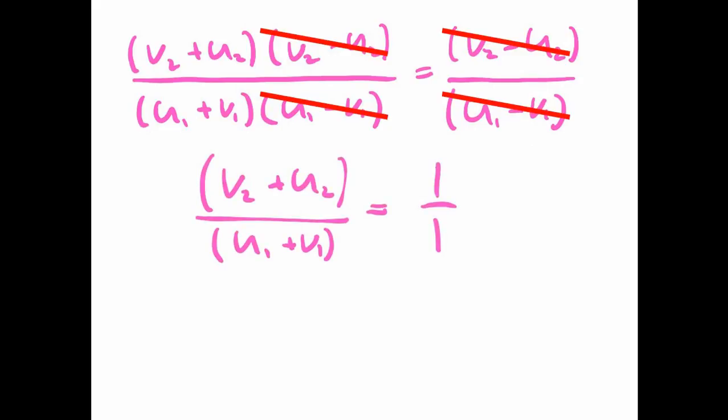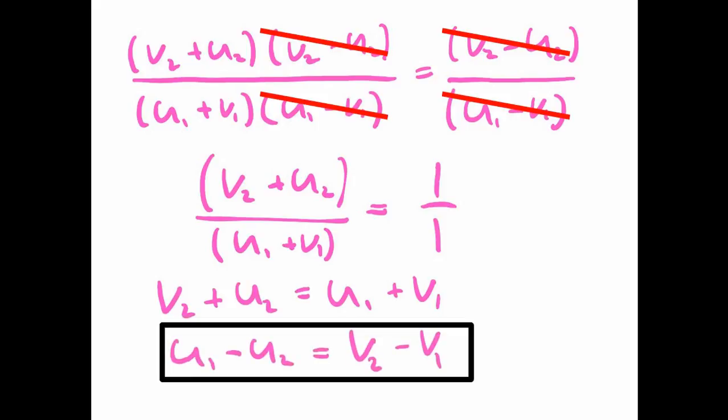V2 plus U2 divided by U1 plus V1 is 1 over 1. So if I move U1 plus V1 up to the top there, on the right-hand side, I get V2 plus U2 is equal to U1 plus V1. And then, finally, with a bit of rearranging the equation, I get U1 minus U2 is equal to V2 minus V1. And if this is true, then our equation is elastic.